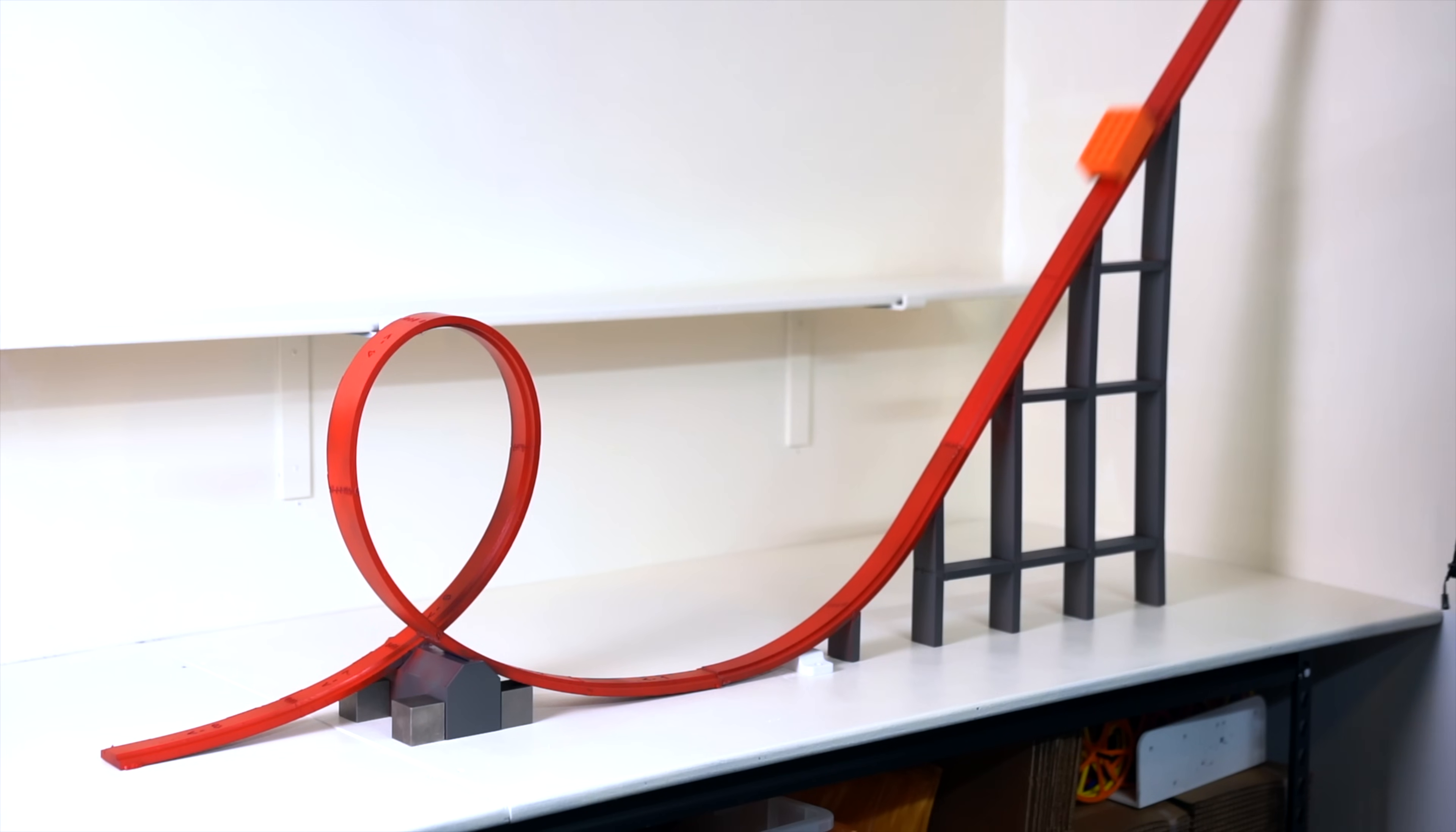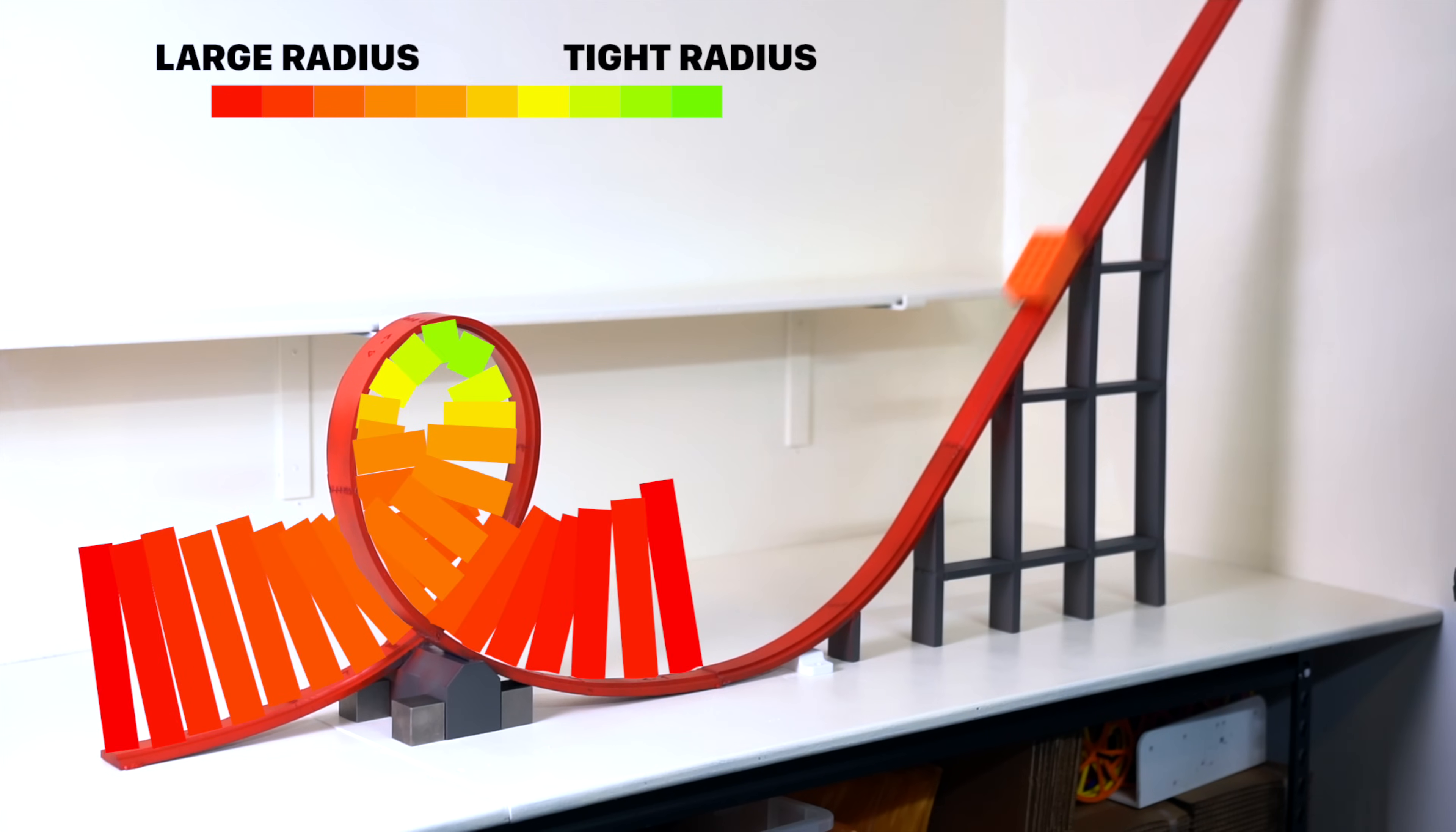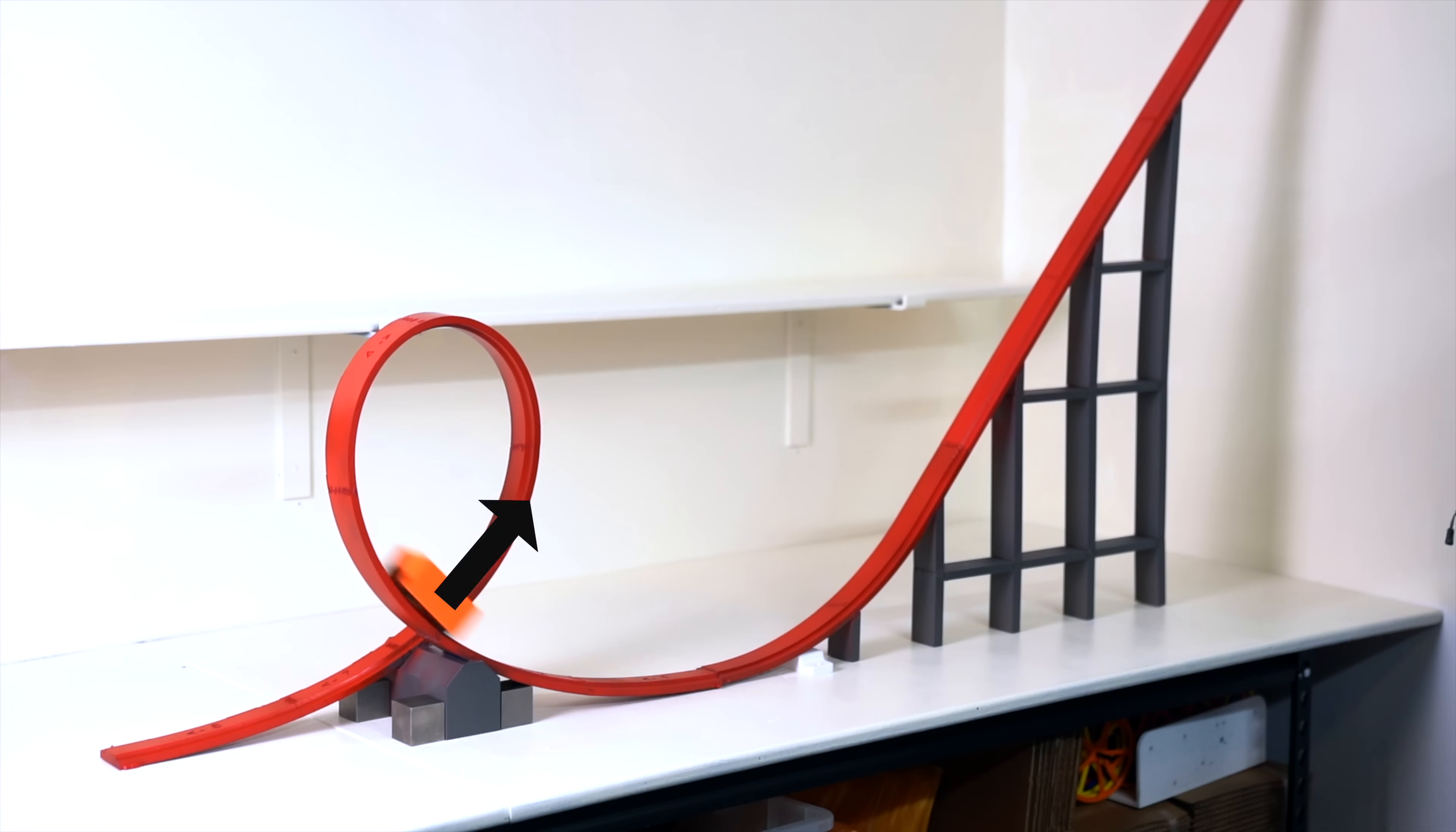So you'll notice that on a teardrop shaped loop the bottom of the loop has a large radius and at the top a very tight radius, then it goes back to the large radius again. So what this means is that we can change the radius of the loop to account for gravity and the change of speed to essentially create a perfect g-force loop.